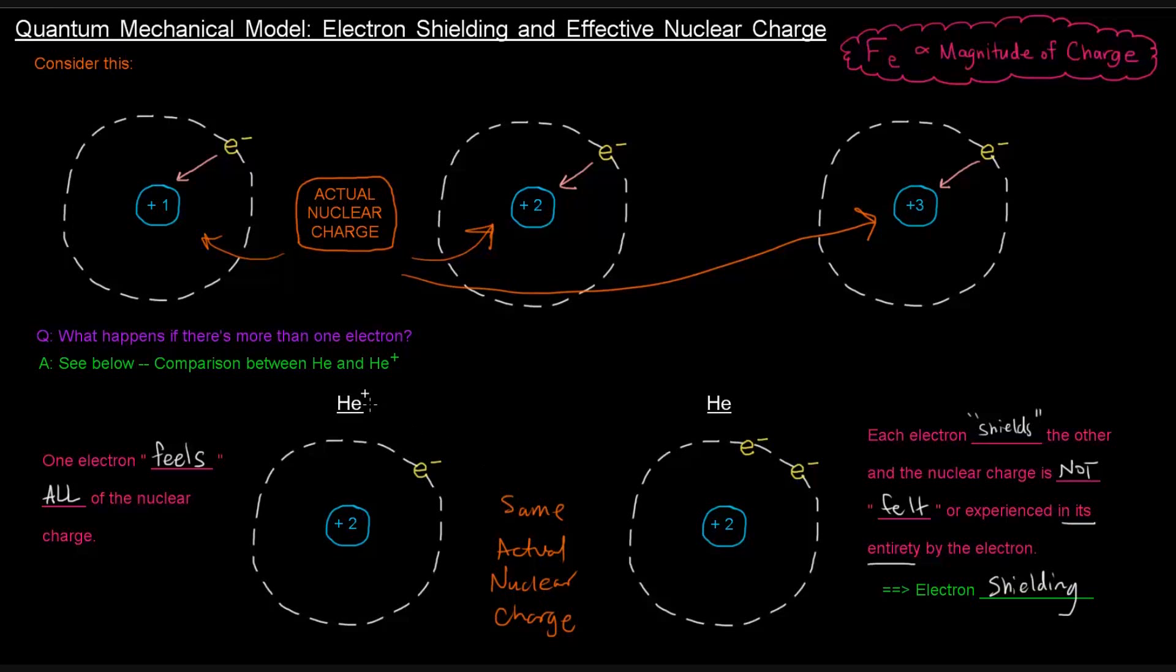But He plus has the greater effective nuclear charge and He has the lower effective nuclear charge. Because the charge that's felt by the electrons here and here is less than the charge the electron feels over here. And it's due to this shielding.